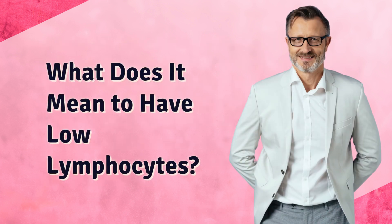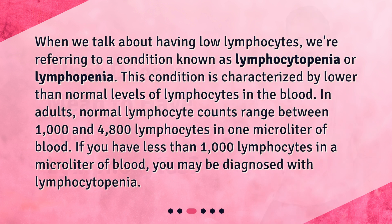What does it mean to have low lymphocytes? When we talk about having low lymphocytes, we're referring to a condition known as lymphocytopenia or lymphopenia. This condition is characterized by lower than normal levels of lymphocytes in the blood. In adults, normal lymphocyte counts range between 1,000 and 4,800 lymphocytes in one microliter of blood. If you have less than 1,000 lymphocytes per microliter, you may be diagnosed with lymphocytopenia.